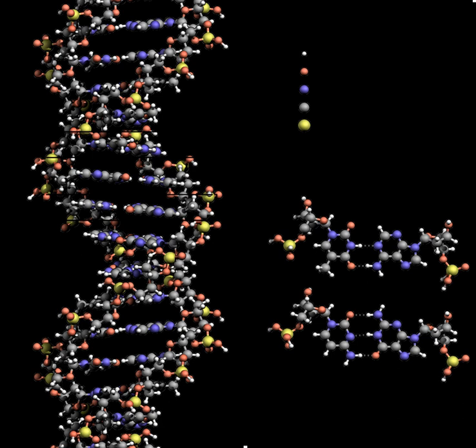One groove, the major groove, is 22 Å wide, and the other, the minor groove, is 12 Å wide. The width of the major groove means that the edges of the bases are more accessible in the major groove than in the minor groove. As a result, proteins such as transcription factors that can bind to specific sequences in double-stranded DNA usually make contact with the sides of the bases exposed in the major groove.